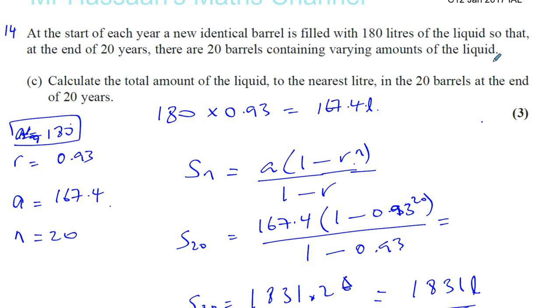So you've got to think a little bit again, because we're thinking about the water at the end of each year, the end of those 20 years. So at the end of the first year, there's going to be 167.4 litres in that first barrel. The second barrel, by the end of that second year, that would have gone down to 167.4 and so on. So you've got to add up all the terms, up to 20 terms, of those barrels being added.